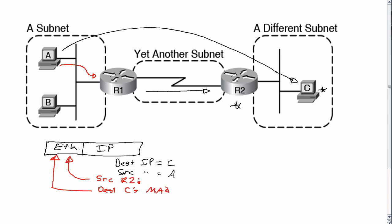That allows the LAN switches on the right to deliver this frame from R2 over to Host C, where Host C can de-encapsulate the data and process it. Notice that the entire trip the destination IP address was Host C's and the source IP address was Host A's — but the data link headers and trailers all changed, using MAC addresses local to each LAN when delivering the data.